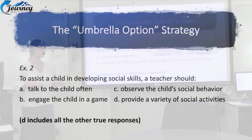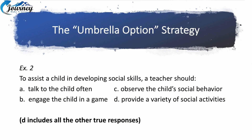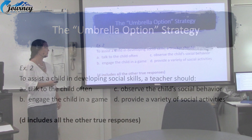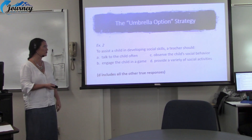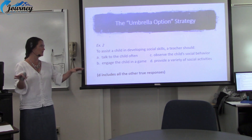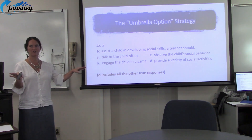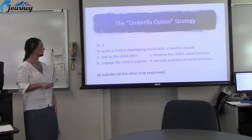Another example: 'To assist a child in developing social skills, a teacher should...' — D is the answer: a variety of social activities. Why? Because A, B, and C are each a type of social activity. So D covers all the other correct responses — all the others are correct individually, but D is the umbrella that covers them all.